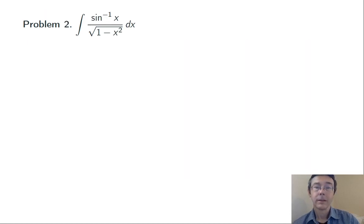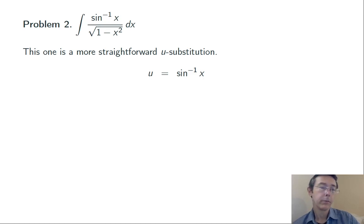Problem two. Integral sine inverse of x over the square root of 1 minus x squared dx. So this is a more straightforward u substitution. We're going to let u equal the inverse sine of x, noticing that the derivative of that is a factor in the integrand, 1 over the square root of 1 minus x squared.